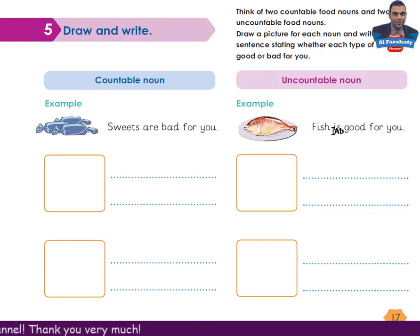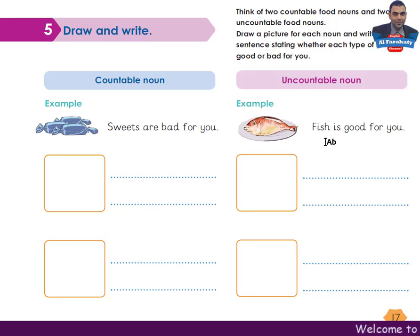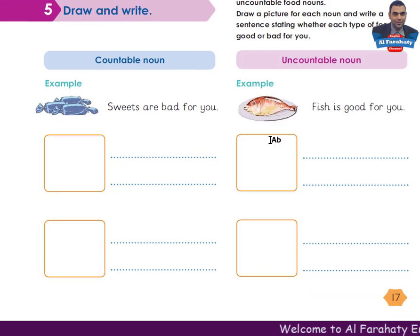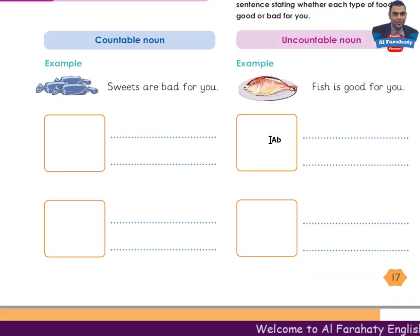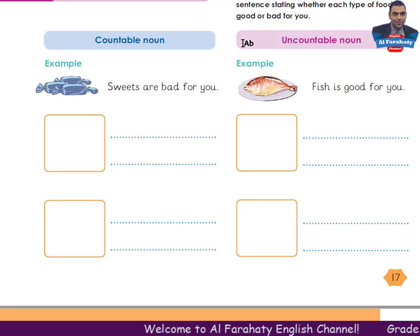Think of two countable food nouns and two uncountable food nouns, and do this activity at home. I think you understand the lesson and how to write sentences like these. By this we've achieved the aims of this lesson. Thank you for following me. Goodbye.